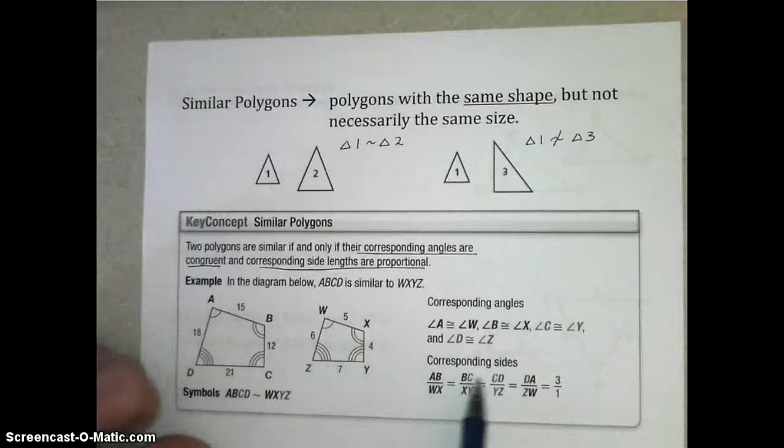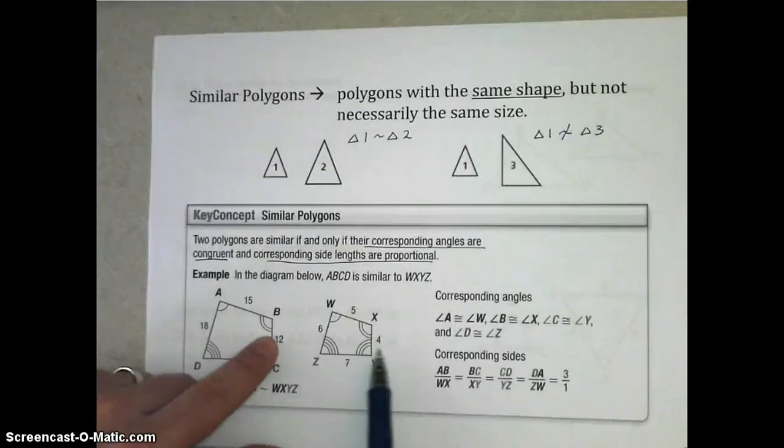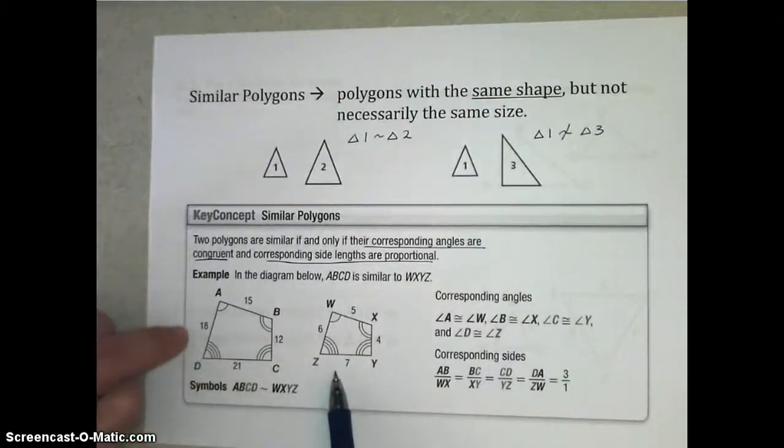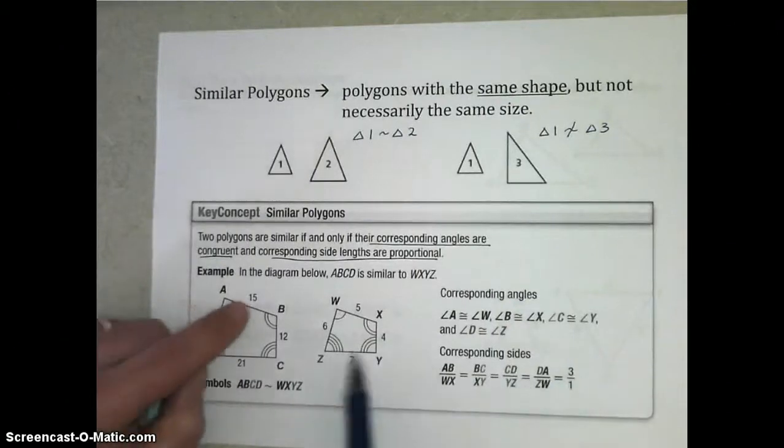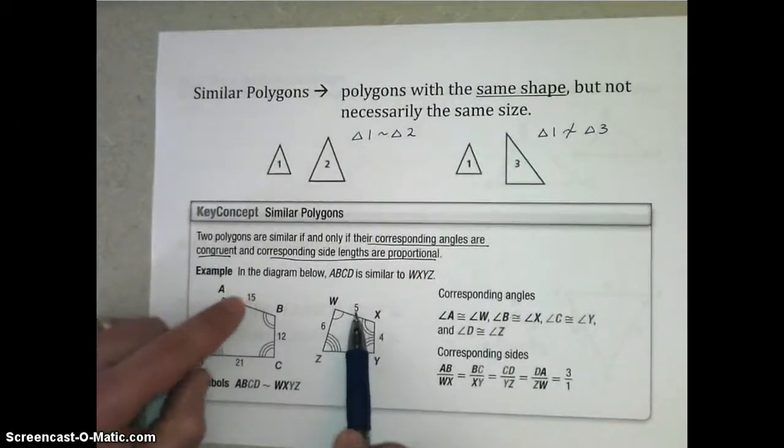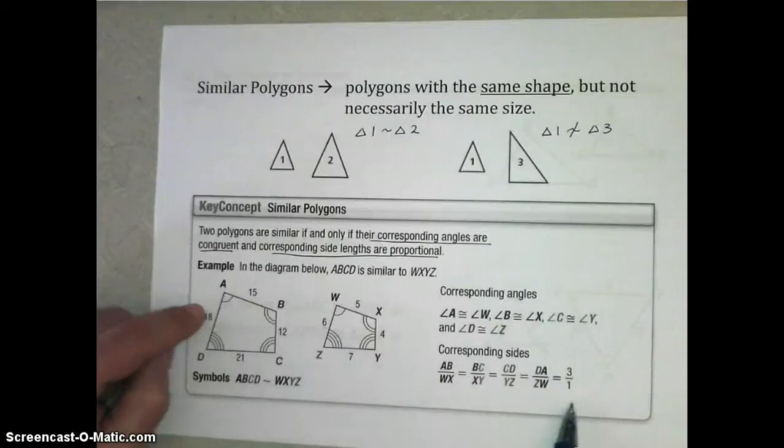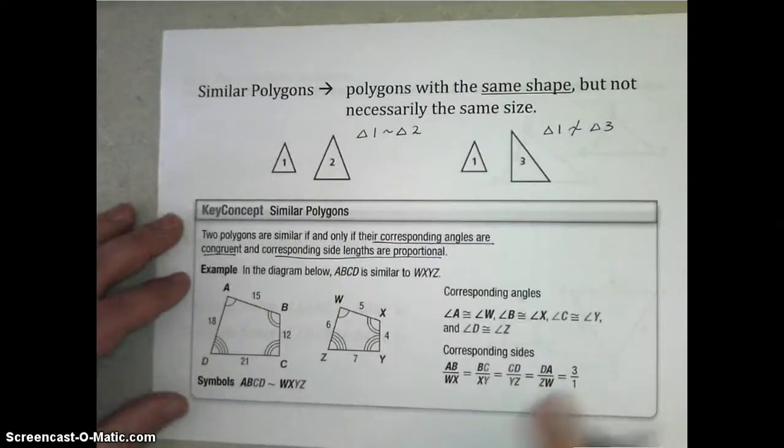And then we have the corresponding sides: AB to WX, BC to XY, CD to YZ, and DA to ZW. And we have all of those working out to be a 3 to 1 ratio. 15 to 5 simplifies to 3 to 1, 12 to 4 simplifies to 3 to 1, 21 to 7, again 3 to 1, and 18 to 6, again 3 to 1. So we can say that ABCD is similar to WXYZ.